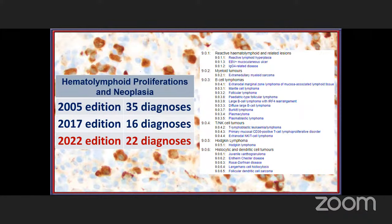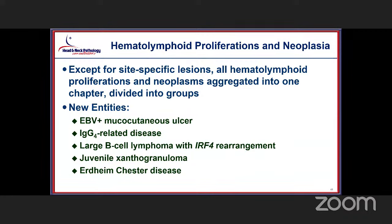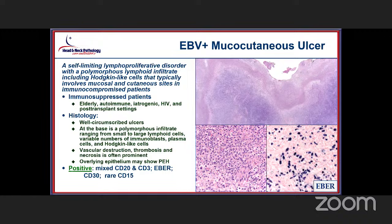When considering hematolymphoid proliferations or neoplasms, a number of entities not previously included have been added into this edition. Site-specific lesions were kept where they were, but all other hematolymphoid proliferations and neoplasms were put into a single book divided by B and T cell categories and some others. New additions include reactive-type lesions such as EBV-mucocutaneous ulcer, IgG4-related diseases — incorporated for the first time — and juvenile xanthogranuloma and Erdheim-Chester disease, added based on features seen within the head and neck space.